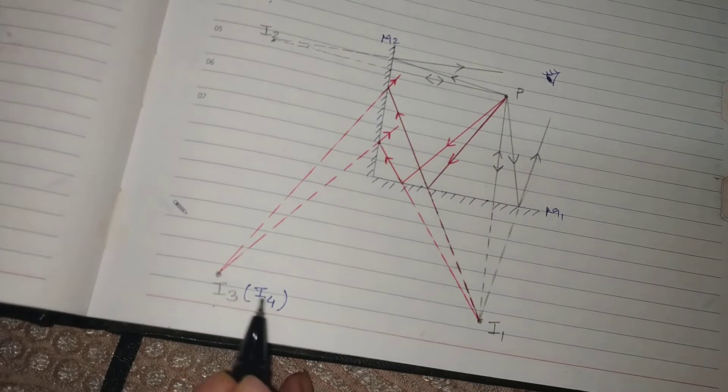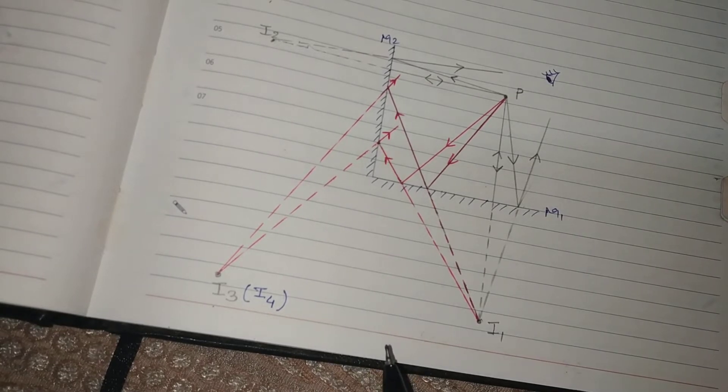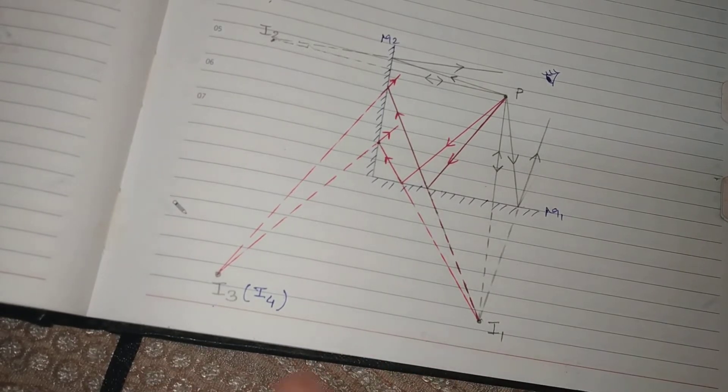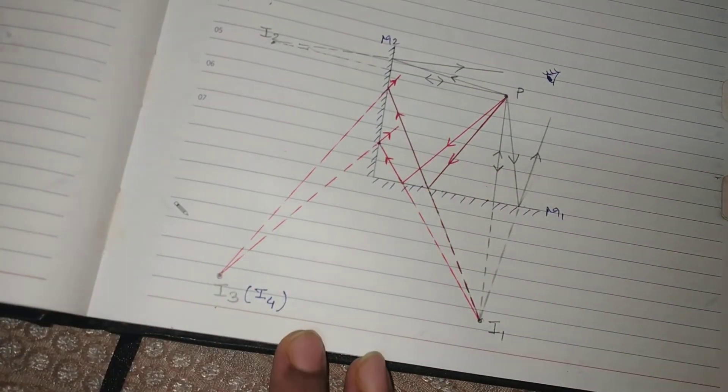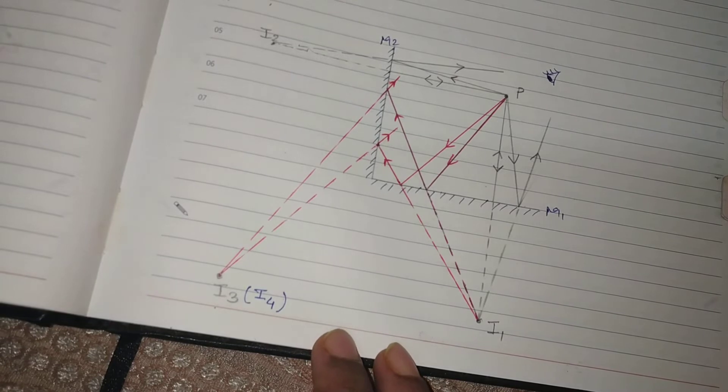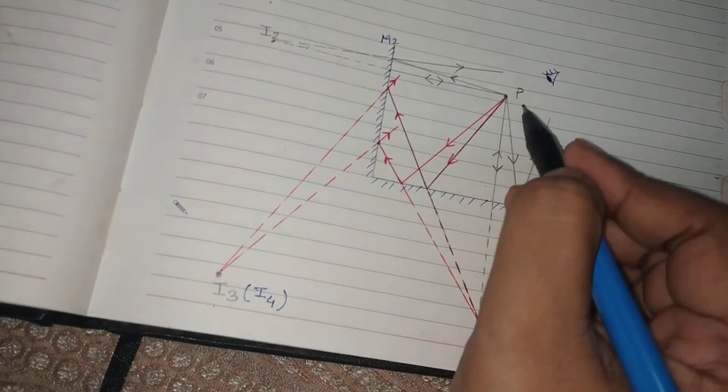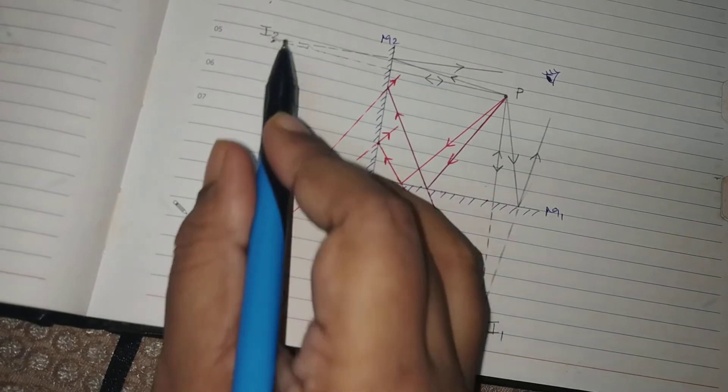Hence I3 and I4 are considered as a single image, even though these are formed by two different sets of reflected rays. So overall we get four images, but we get to see only three of them because of the overlapping of the third and the fourth image. So this is the complete ray diagram of a situation when two plain mirrors are kept perpendicular to each other, and the image of the point object is seen at these three points.